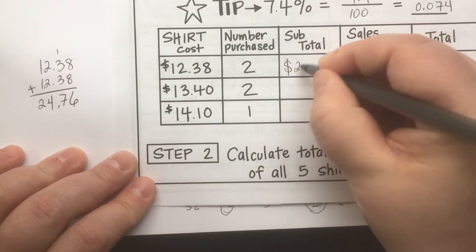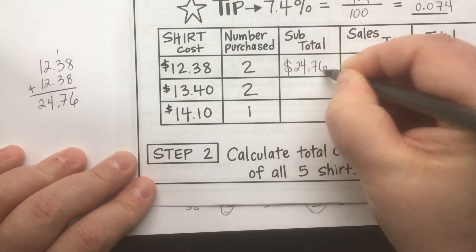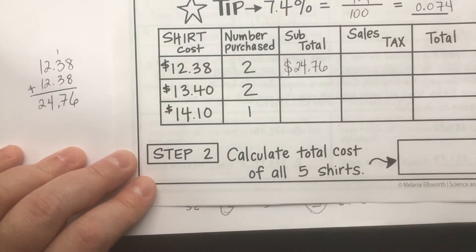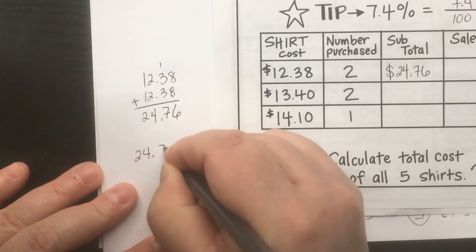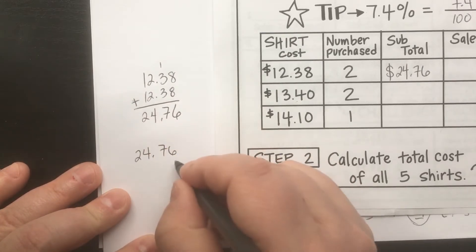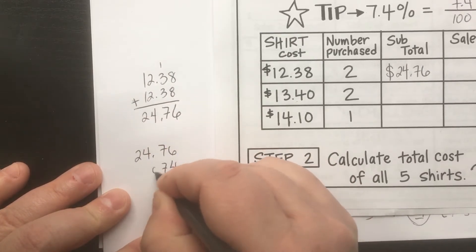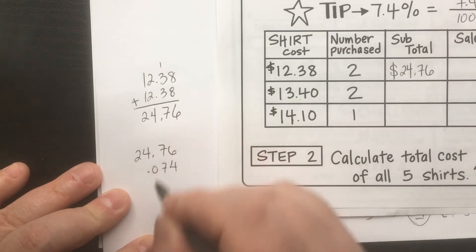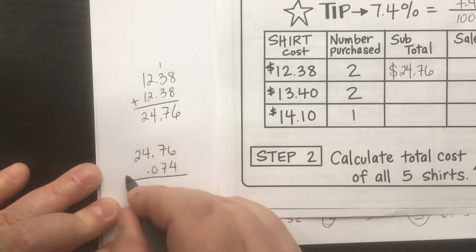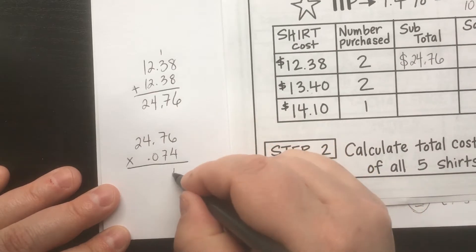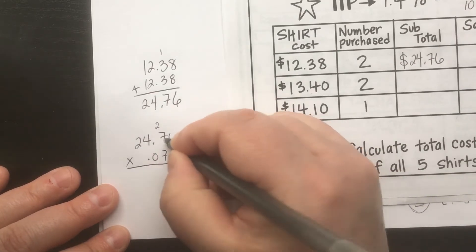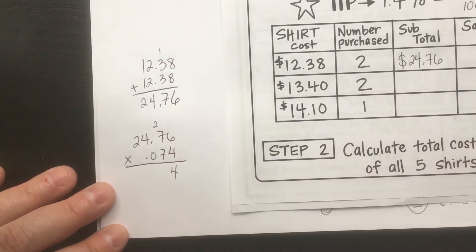Now in order to find the sales tax, we multiply our subtotal by our rate. So we have $24.76 and we're going to multiply it times our rate of 0.074. Let's work through the multiplication — four times six is twenty-four, four times seven is twenty-eight plus two is thirty.